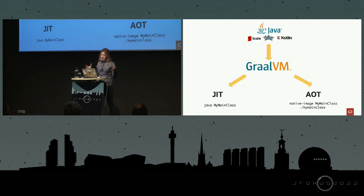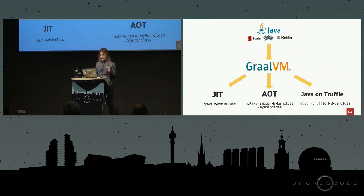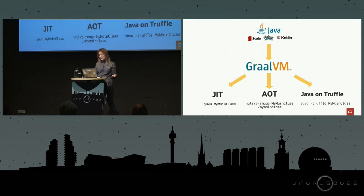GraalVM contains a JDK with all your favorite tools and you can easily use it in JIT mode. With GraalVM you get to choose which way to run your applications based on your performance preferences. In fact, as of about a year ago there is even a third way to run Java on GraalVM, called Java on Truffle — some of you might know it by the code name Project Espresso.